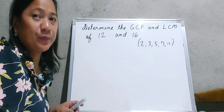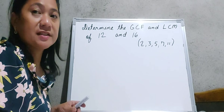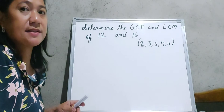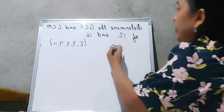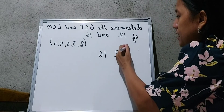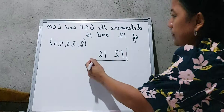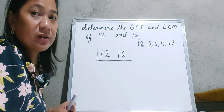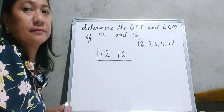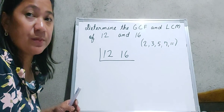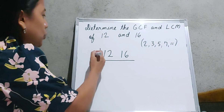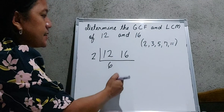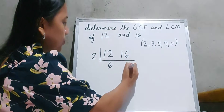Let us have another example. Let us now determine the greatest common factor and least common multiple of 12 and 16. Again, we write 12 and 16 horizontally with the division sign. The only prime number divisible by both 12 and 16 is 2. So 12 divided by 2 is equal to 6 and 16 divided by 2 is equal to 8.